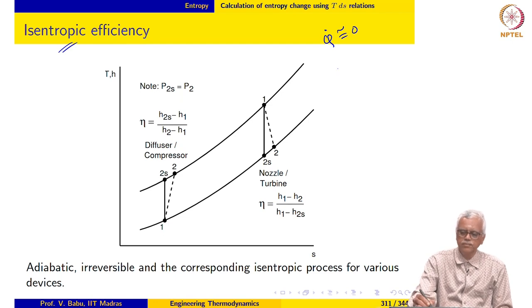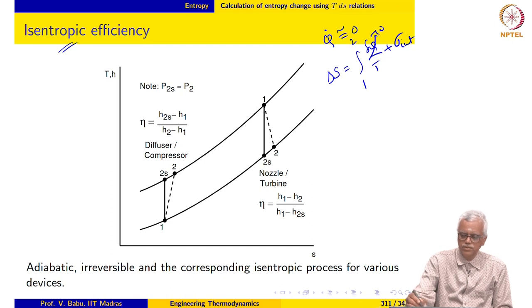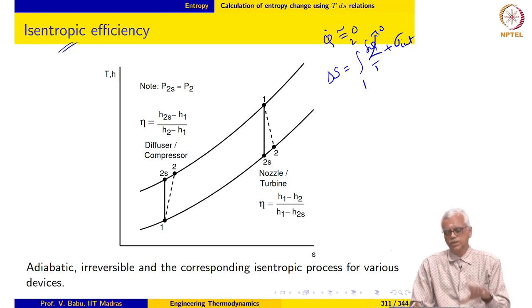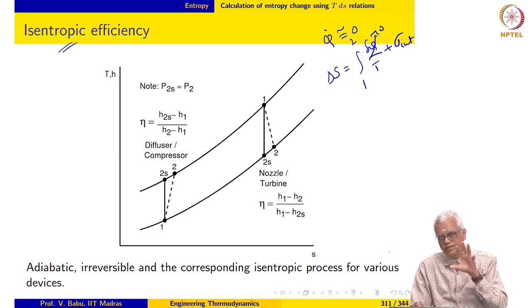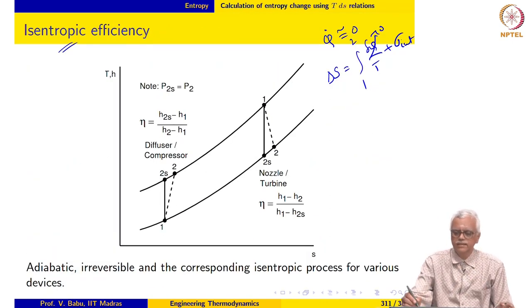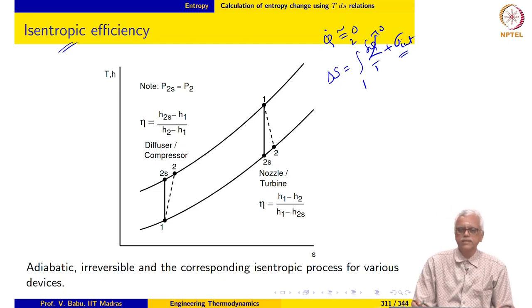For such devices, if you recall, delta-s from 1 to 2 equals the integral of delta-q over T plus sigma-internal. If the process is adiabatic, the first term is entirely equal to 0, and in the absence of any irreversibility, delta-s would remain 0. So if the process executed in the device is an isentropic process, then entropy change is 0, indicating the device is operating in the best possible manner because there are no internal irreversibilities.